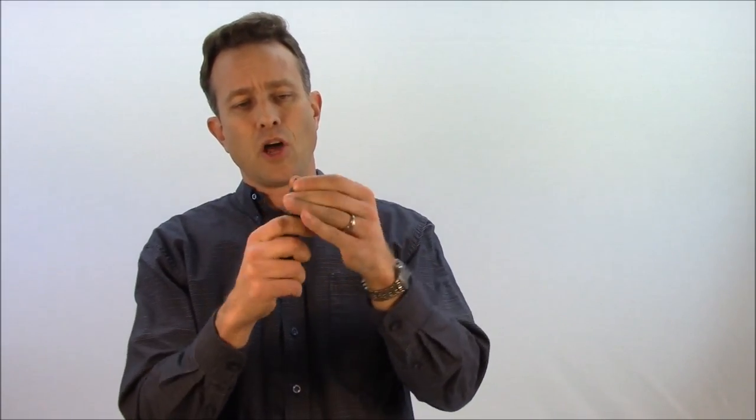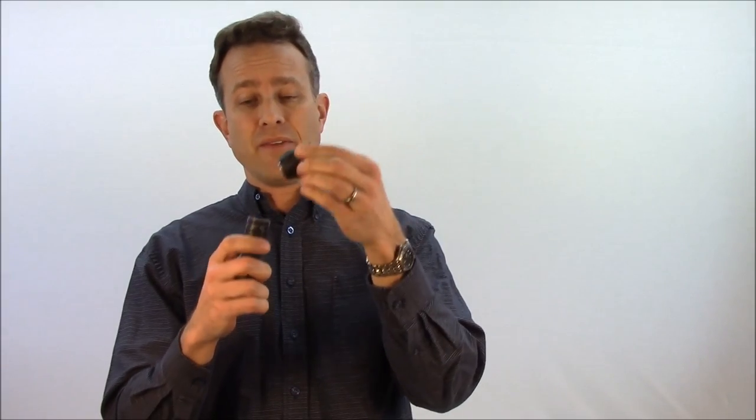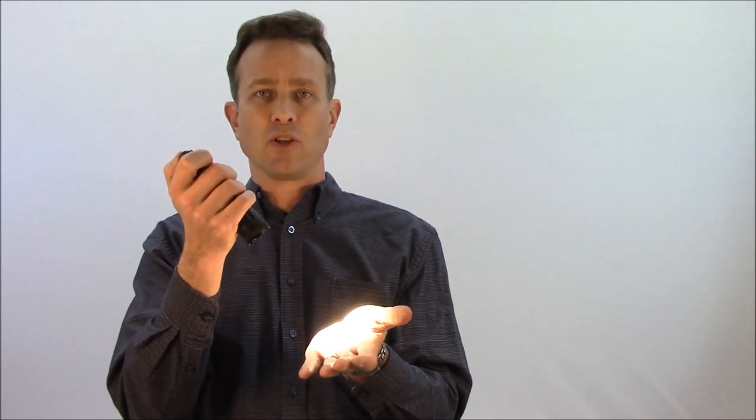I simply remove the bezel. Along with removing the bezel, I'll remove the Malkoff LED module and simply get a new El Zeta high-output AVS head. It simply screws right on. That easily, I've increased my output from 235 lumens to 650 lumens.